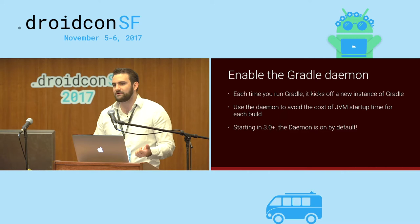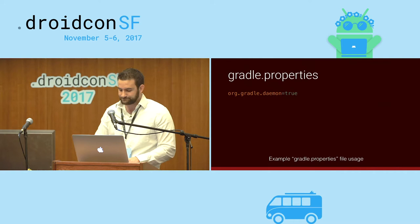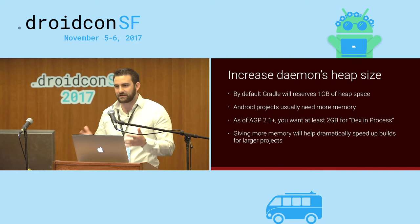Throughout this presentation, I'll be building out a Gradle.properties file. The default Gradle only has about one gigabyte of RAM. For Android builds specifically, you probably need a little more than that — especially for larger multi-dex projects and larger multi-module sub-module projects.